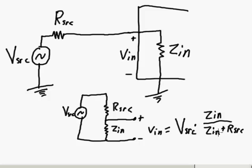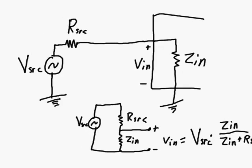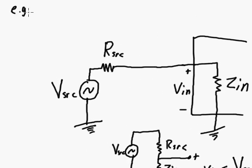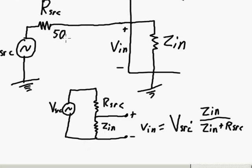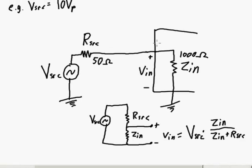So, current is created. There's some voltage drop across R source, and the rest of the voltage drop is across Vin. So, Vin is going to be equal to V source times Zin over Zin plus R source. So, Vin will be some fraction of V source. So, for example, let's say V source is equal to 10 volt peak. So, it is an AC source, 10 volt peak. And we've got our source is 50 ohms. There's a 50 ohm output impedance of the source. And Zin is equal to 1,000 ohms.